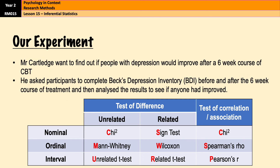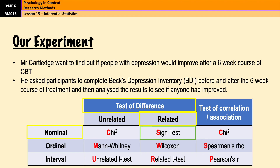Mr. Cartlidge wants to find out whether people with depression would improve after a six-week course of CBT. Participants completed Beck's Depression Inventory before and after treatment, and results were analysed to see if anyone had improved. It is a test of difference with a related design, because everyone is the same participant. Importantly, it is nominal data — because the only question is whether someone improved or did not improve, not by how much. That makes it nominal, and therefore the sign test is used.